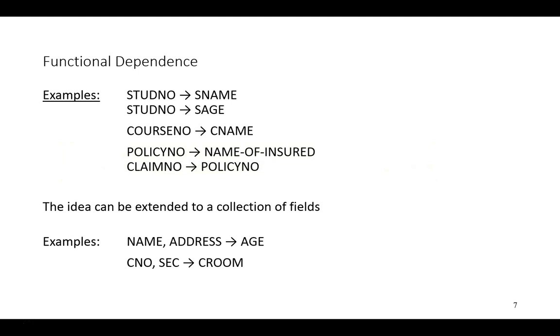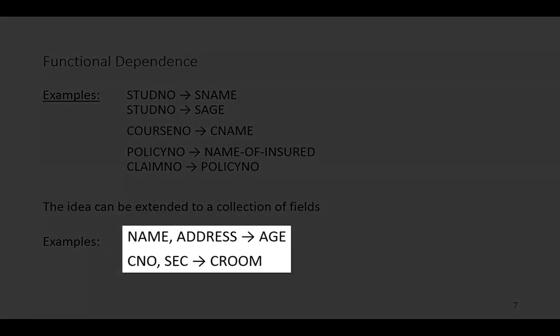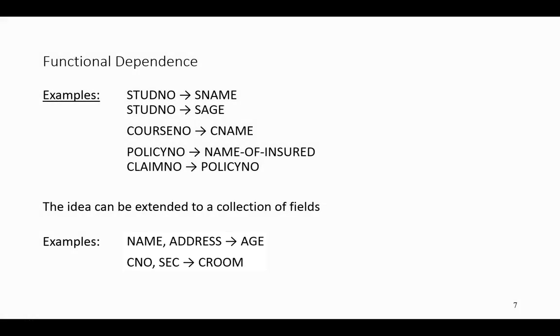We have additional examples that show the notion of multiple attributes. That is, if you tell me the combination of name and address — the values of these two things — then I can determine the age. If you tell me the course number and section number, I can tell you the room that a class might be scheduled. So again, x and y could be sets of values.